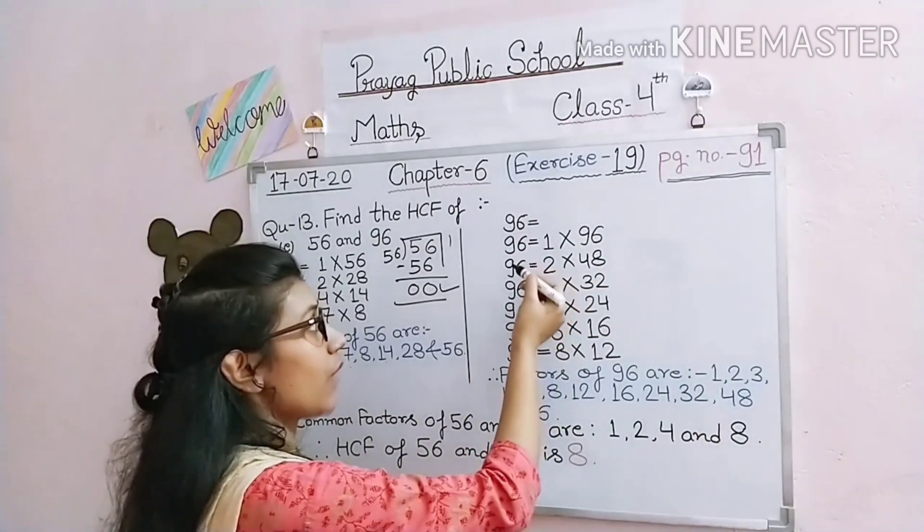We found factors of 56 and factors of 96. Now to find the HCF, we first find the common factors, then identify the highest one. Common factors of 56 and 96: 1 is in both, 2 is in both, 3 is in 96 but not 56, 4 is in both, 7 is not in 96, 6 is not in 56, but 8 is in both.